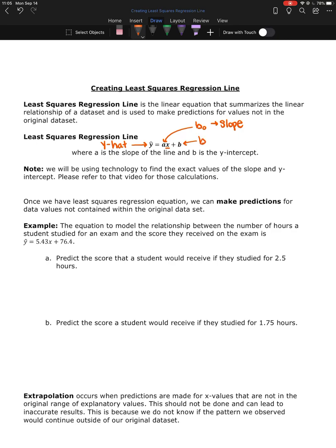And then here we have plus b, so this is sometimes notated as b1. And this is telling us where the y-intercept is. So the least squares regression line is y hat equals ax plus b, where a is the slope and b is the y-intercept.